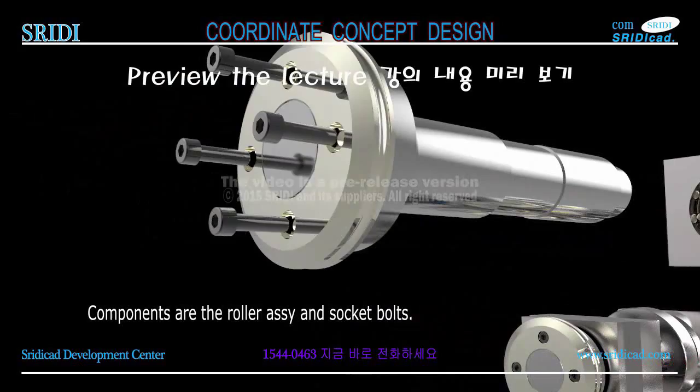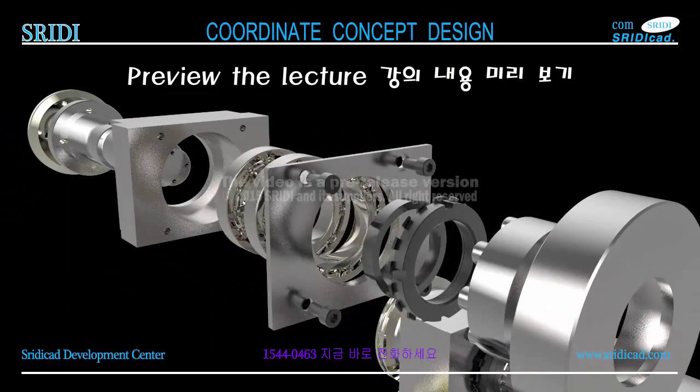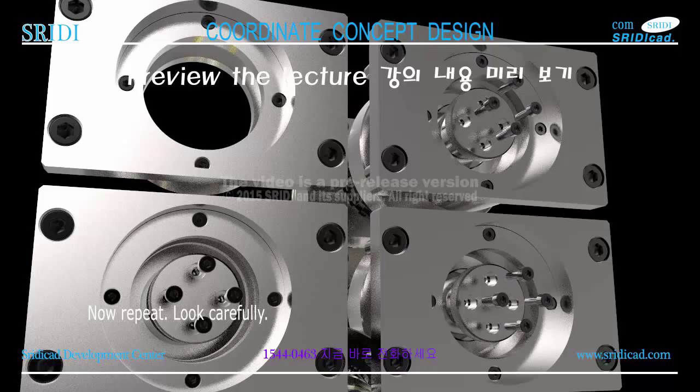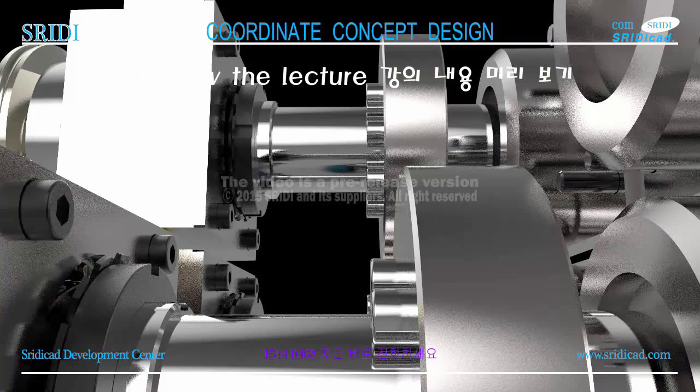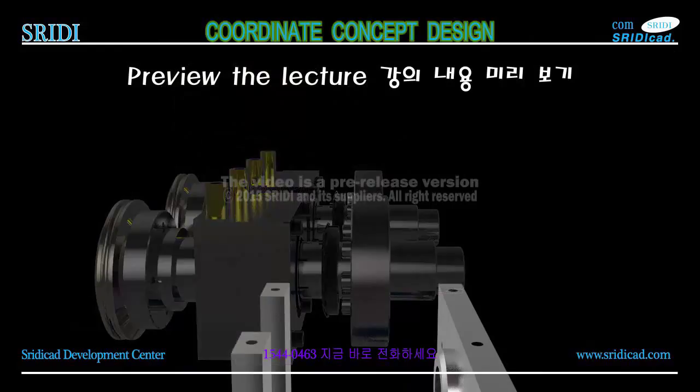The components are the bearing end cover and bearing housing. Here is the remaining part number one components. Look carefully — here are the components: coordinator bracing and hex bolts. You have to look at the front plate and front floor flat.